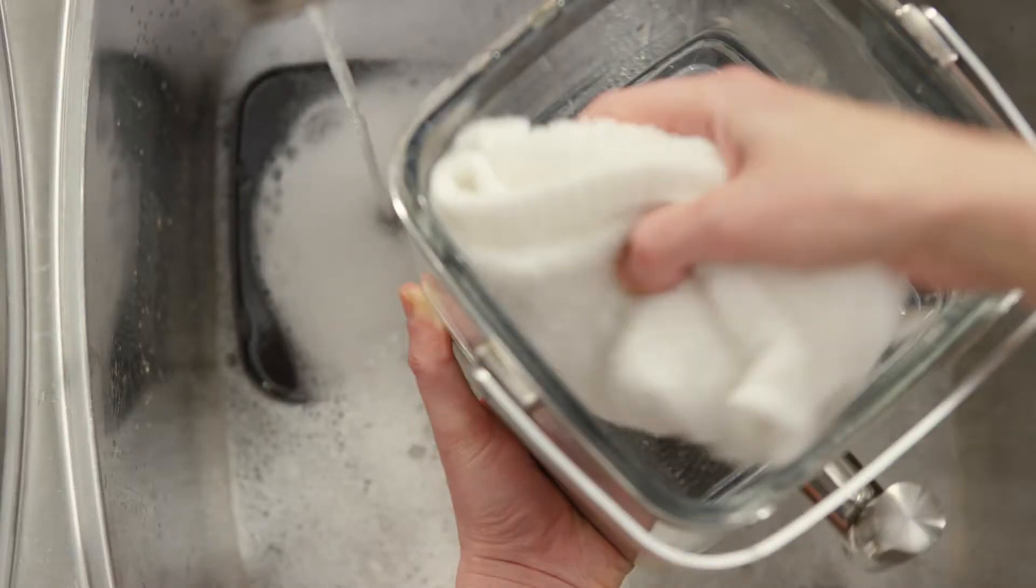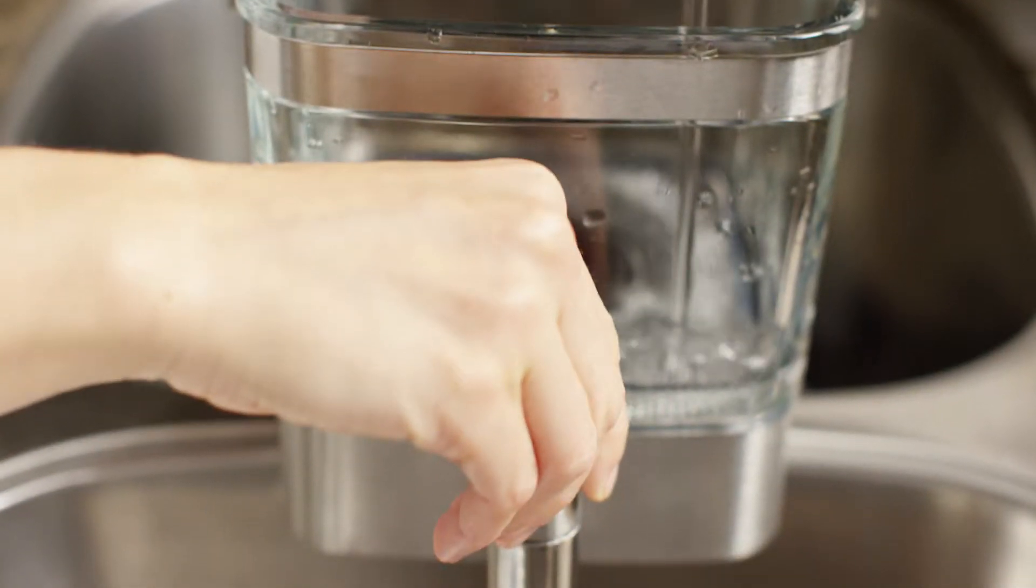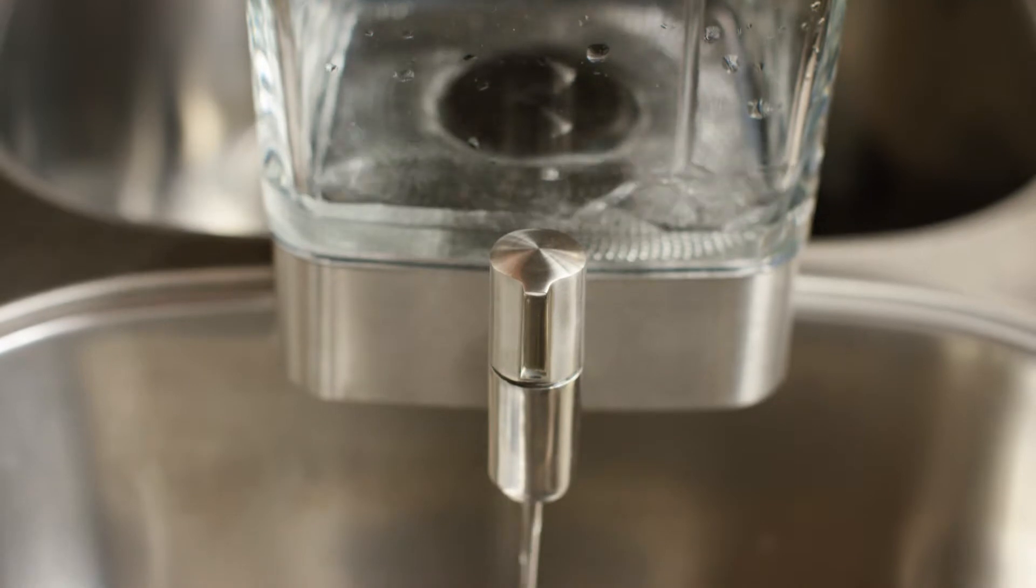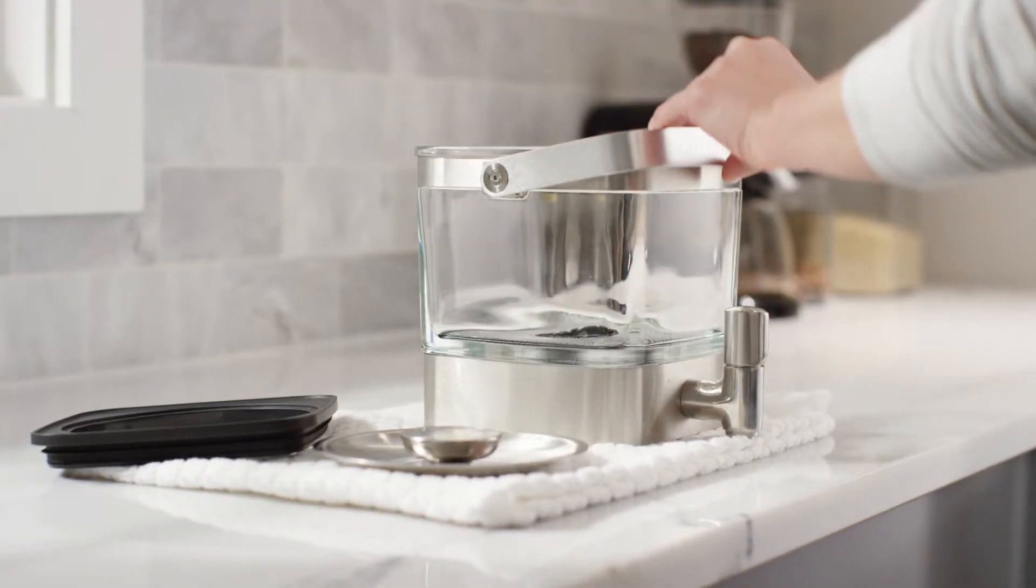When you're finished brewing, wash all parts by hand in warm soapy water. Open the tap and run warm water through the brew jar until the tap is empty. Dry all parts thoroughly with a soft cloth.